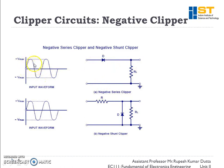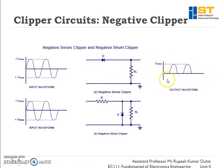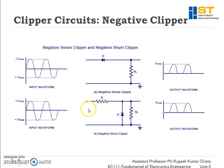In the negative series clipper, when a positive voltage is applied the diode becomes forward biased and all positive peaks pass to the load. In the negative half cycle the diode becomes reverse biased — negative voltage is applied to the positive terminal — so the diode is open-circuited and the source is disconnected from the load. No negative peaks appear in the output waveform.